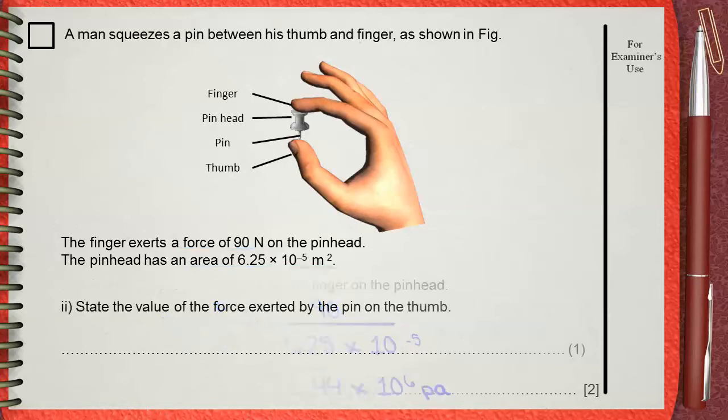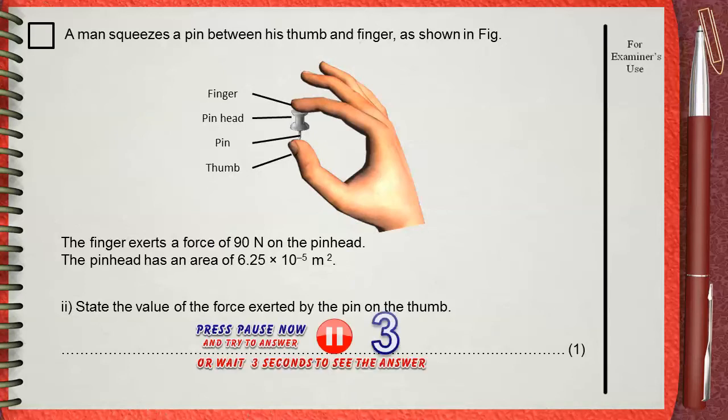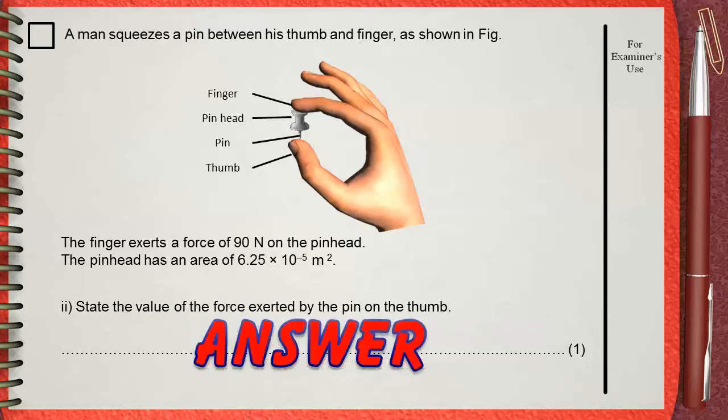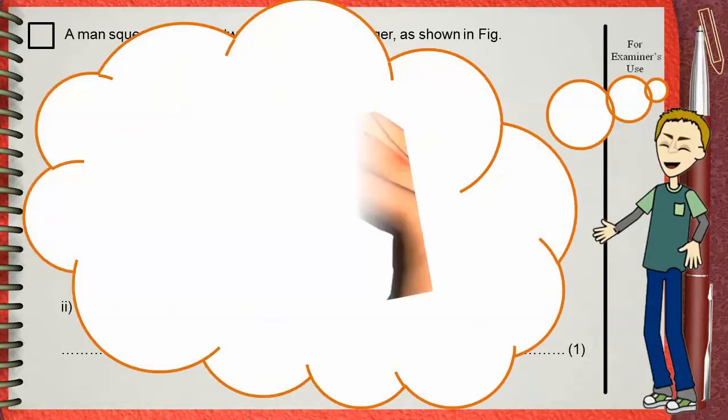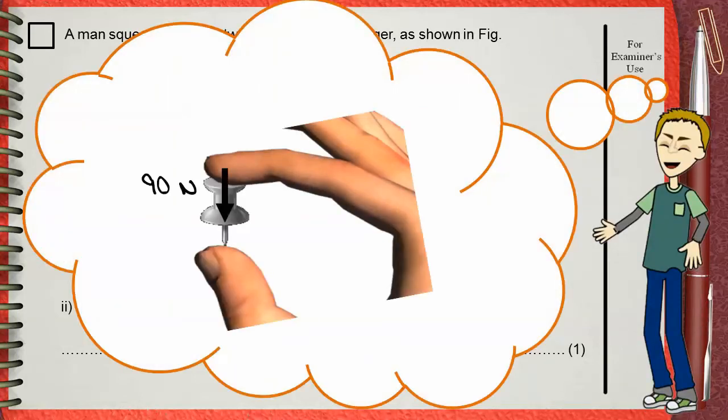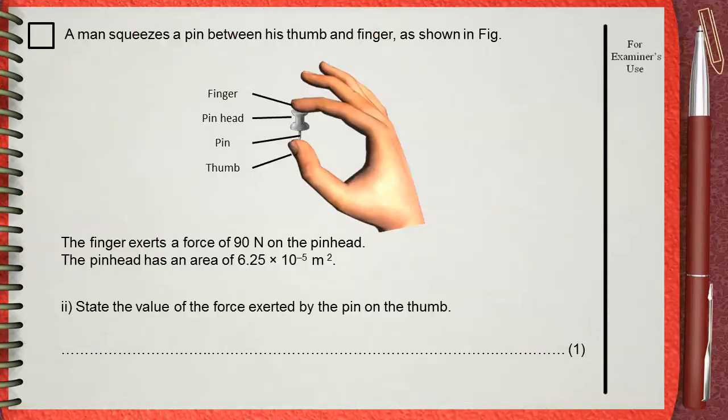Part ii: State the value of the force exerted by the pin on the thumb. The finger applies a force of 90 newtons on the pinhead, so the pinhead applies the same amount of force on the thumb. The answer to this question is 90 newtons - it applies the same force.